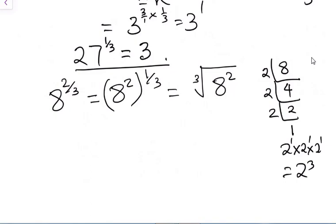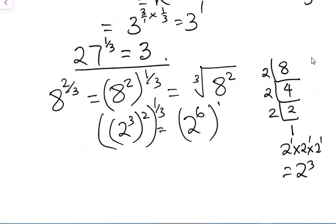So, we can bring our 2 raised to power 3 here. And these 2 here to give us 1 over 3. And that will be 2 raised to power 6 times 1 over 3. And that will be 2 raised to power 6 over 3. And 2 raised to power 2. And the answer will be 4.